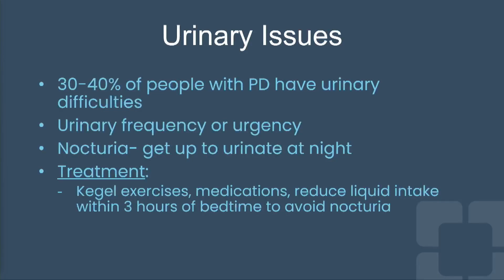About 30 to 40 percent of people with Parkinson's will have urinary difficulties — typically urinary frequency or urgency, where you're running to the bathroom frequently or have to get there immediately. It can also cause nocturia, getting up frequently at night to urinate. Kegel exercises are extremely effective for this. Avoiding fluids within three hours of going to sleep helps with nocturia, and sometimes medications are needed.